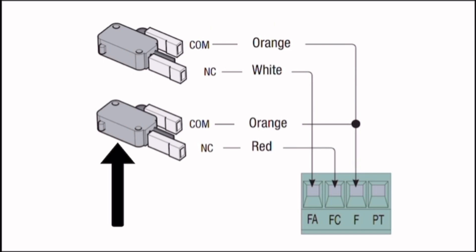Lower Limit Switch Closed Position: The COM (orange wire) connects to the F terminal on the control board. The NC (red wire) connects to the F.C. terminal, representing the fully closed position.